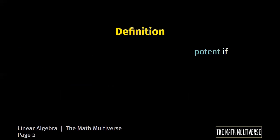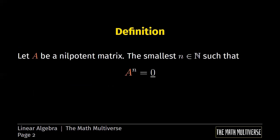So now, what is the nilpotency index of a nilpotent matrix? Whenever we have a nilpotent matrix, we have seen by definition that there exists an integer n such that A to the n is equal to 0. But it may not be the smallest.